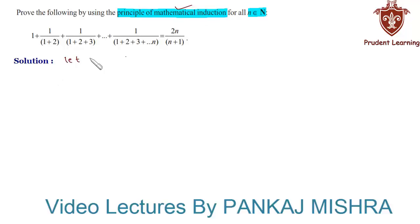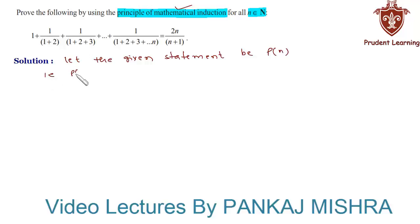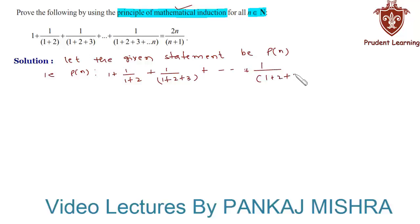Let the given statement be P(n), such that 1 plus 1 upon (1 plus 2) plus 1 upon (1 plus 2 plus 3), all the way up to 1 upon (1 plus 2 plus 3 up to n), equals 2n upon (n plus 1).